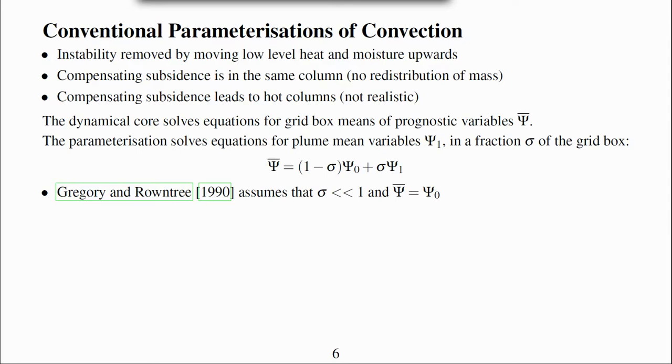Old fashioned parameterisations such as Gregory and Rowntree assume that σ is small and so the grid box mean is approximated by the value outside convection as ψ bar is approximately equal to ψ₀. This is an important approximation because it means that the convection parameterisation only provides source terms to slowly varying variables and therefore doesn't threaten the stability of the dynamical core.